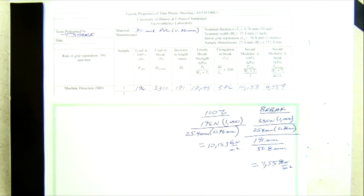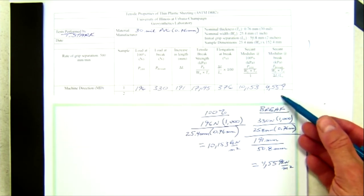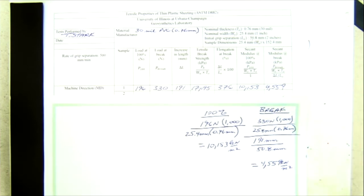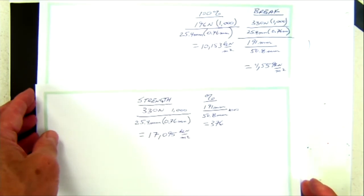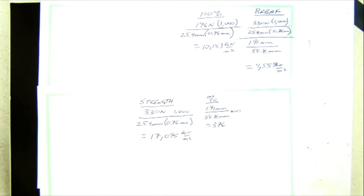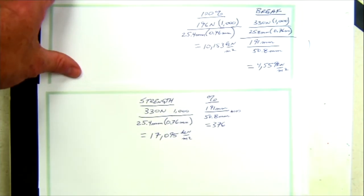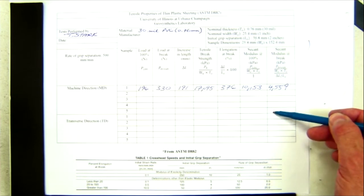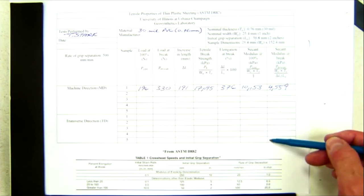You can see the modulus at break is more than 50% lower than the modulus at 100% elongation. Those are the calculations for the tensile properties of thin plastic sheeting according to ASTM D882. There is the completed data sheet. Four more specimens in the machine direction would be tested, and the averages of those five reported for the machine direction, then five specimens in the cross-machine direction averaged.